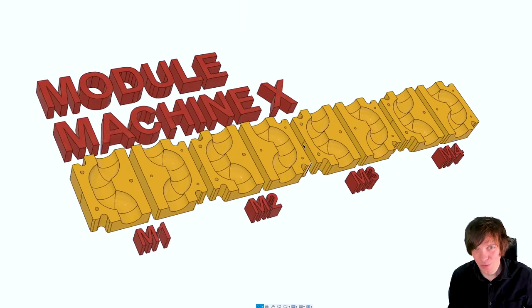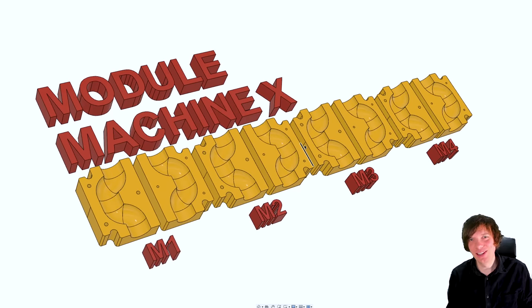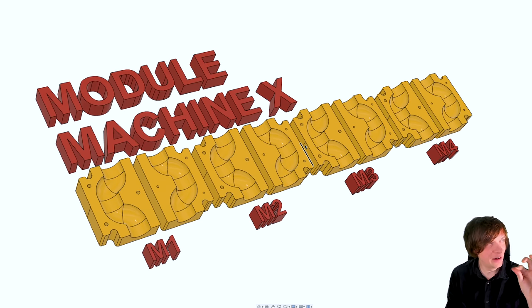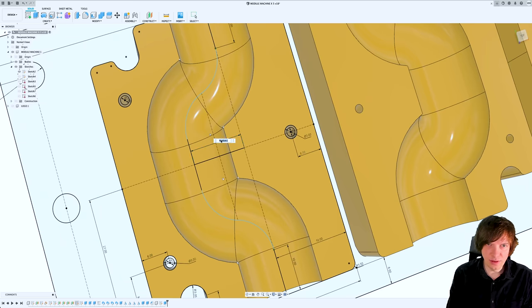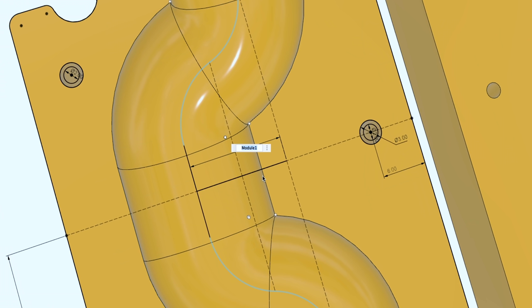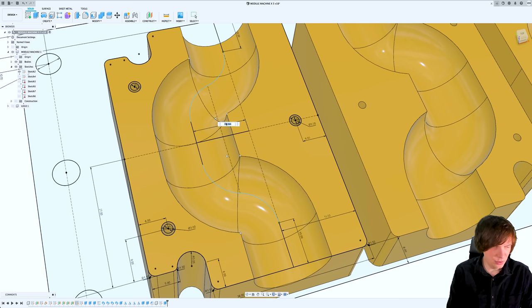So this morning I made a really nice Fusion 360 design that lets me parametrically produce these modules in any value I want. The module Machine X. I think this is the best CAD file I've ever made. This distance right here is determining the value of the marble path. So let me do something more viewable. 10. Do you see how the path got tighter?